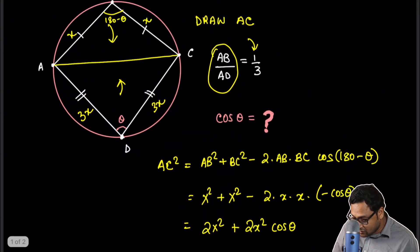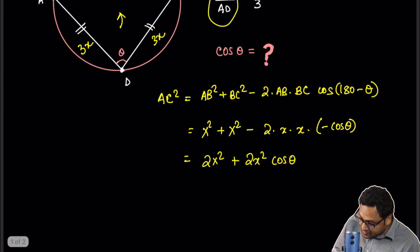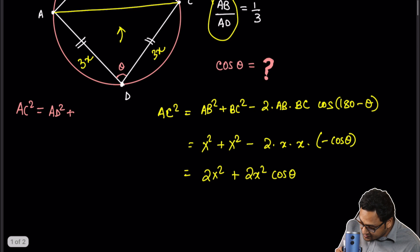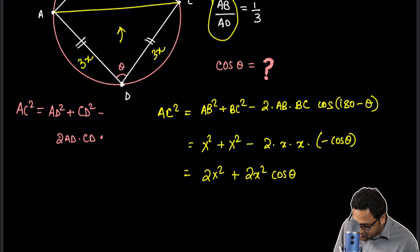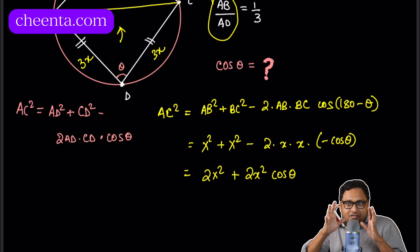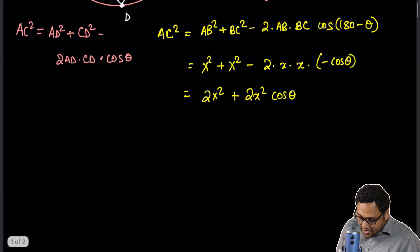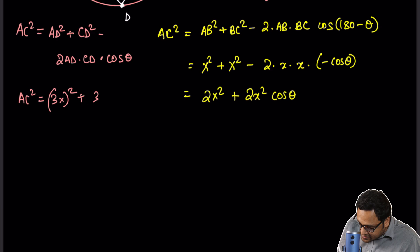Now we want to figure out AC from this direction. Again, the second equation is, AC squared is equal to AD squared plus CD squared minus 2 times AD times CD times cosine of the angle in between, cosine of theta. So this is the central idea. I am measuring AC in two different ways. So now let's write it down. AC squared is 3X whole square plus 3X whole square minus 2 times 3X times 3X times cosine of theta.